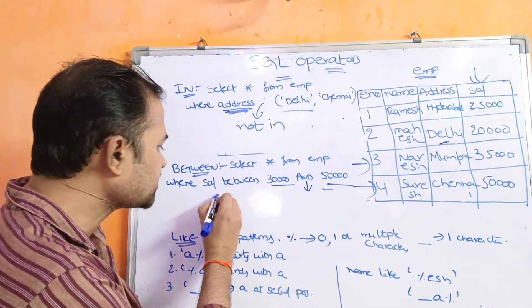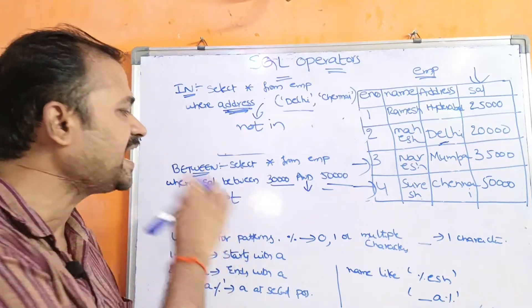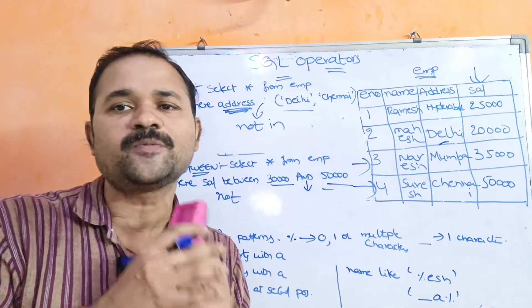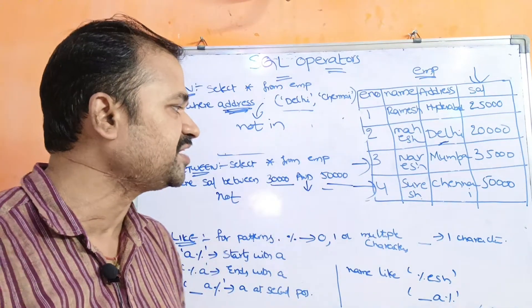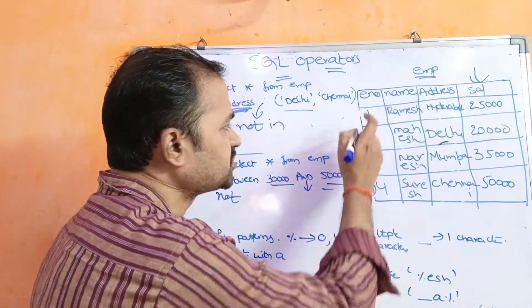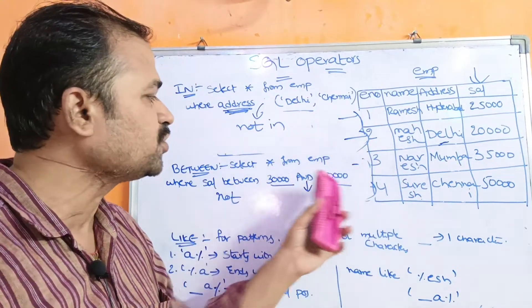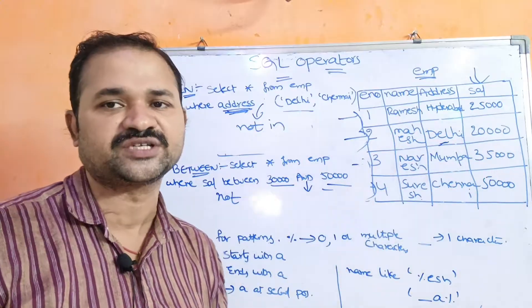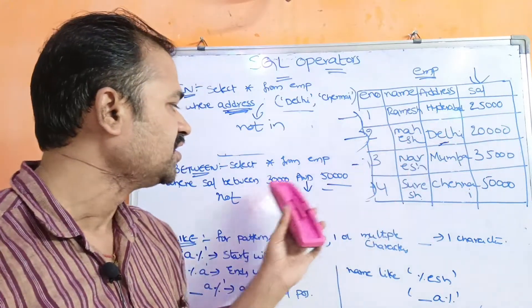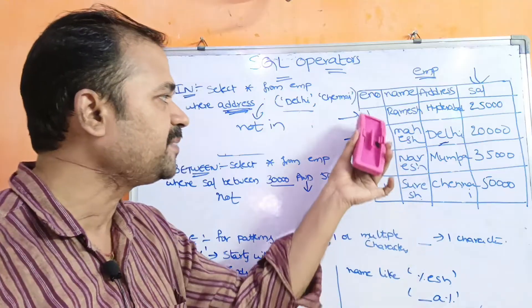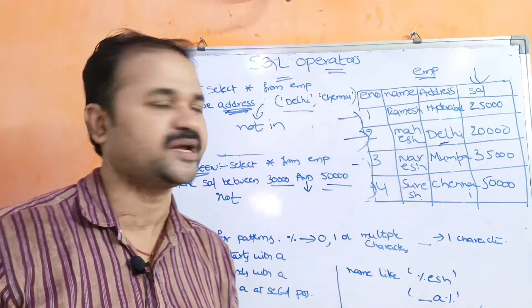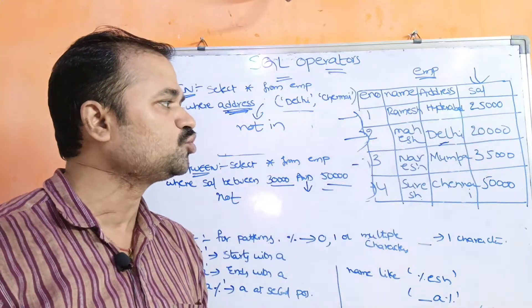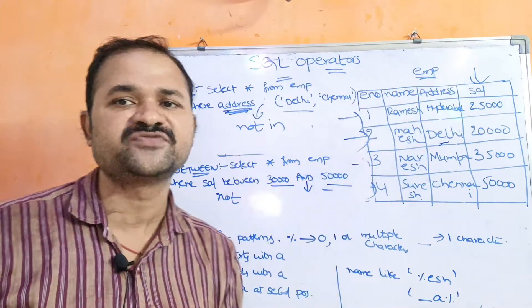Now we can use NOT BETWEEN also. WHERE salary NOT BETWEEN 30,000 AND 50,000. That means the salary should not be between 30,000 and 50,000. We have two records where the salary is not in that range — those are 25,000 and 20,000. So the first two records will be displayed: 1, Ramesh, Hyderabad, 25,000 and 2, Mahesh, Delhi, 20,000.